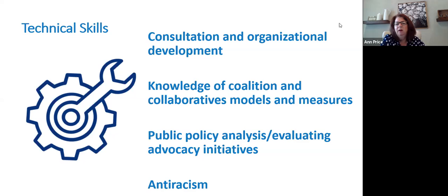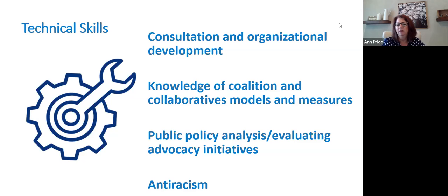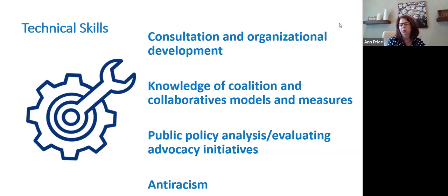Public policy analysis and advocacy — there's a whole TIG within AEA that focuses on public policy analysis, which is super important because we can have great public policy but if it's not implemented correctly, what good is it? And then anti-racism — we've just gotten super explicit about adding that as a skill. Susan and I have been talking about how you can have the book knowledge, but still not have that change of power or be aware of your own biases. So we put anti-racism in the technical skills and cultural humility in the personal section.